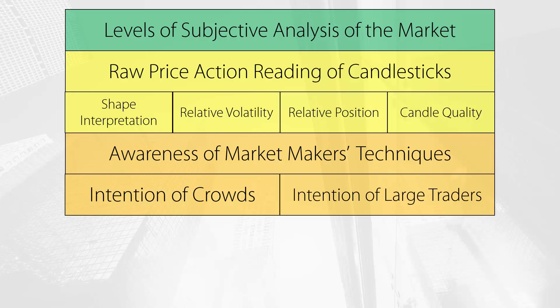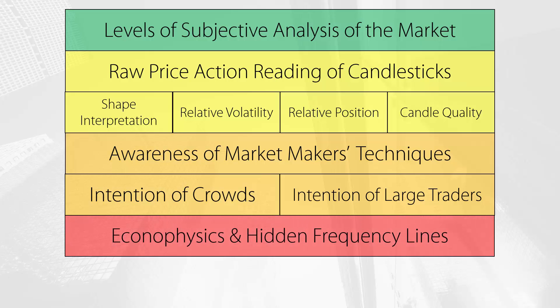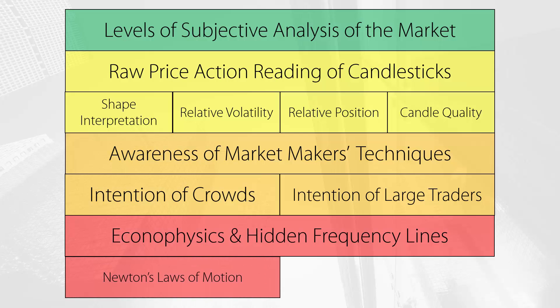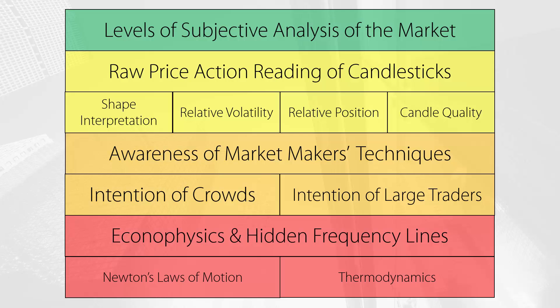The third level of the subjective analysis of the market is a little more complicated and it involves ideas like econophysics, hidden frequency lines of the market, and observing the unique way in which price behaves around such lines. Econophysics is the realm of science that deals with the intersection between economics and physics. For example, we can use Newton's laws of motion to determine the inertia of trends and future reactions of price based on past actions. We can also borrow an idea from thermodynamics to measure how volatility expands and contracts on the chart, which works along the same lines as the action and reaction principle from Newton. For example, we can calculate the future volatility expansion of price based on its past volatility contraction.